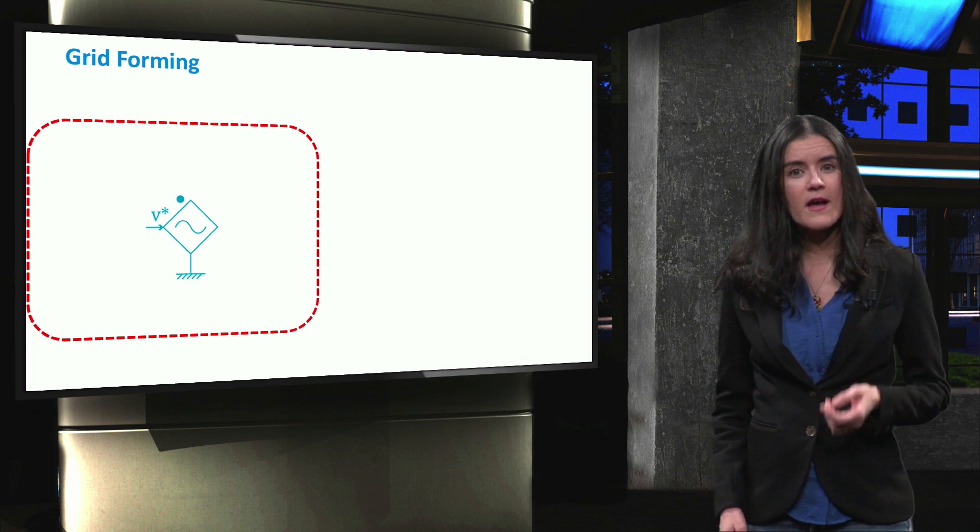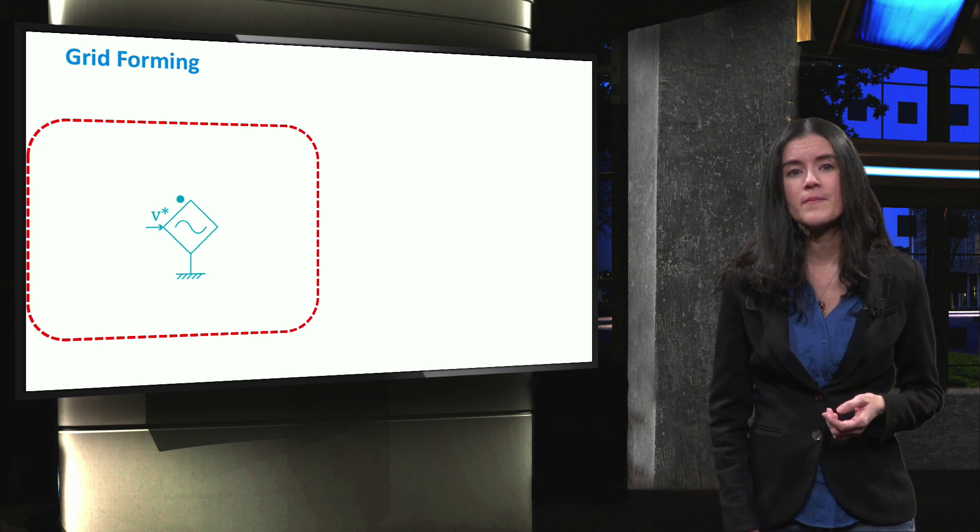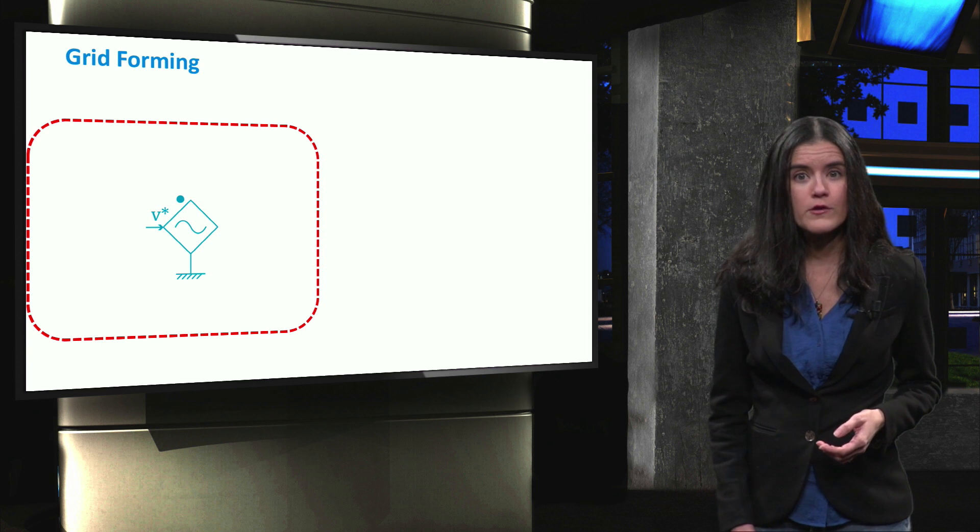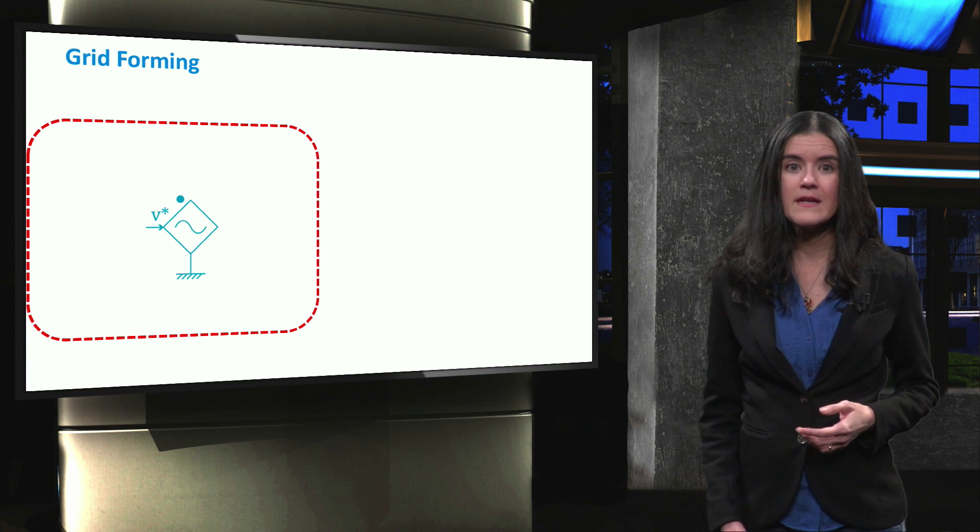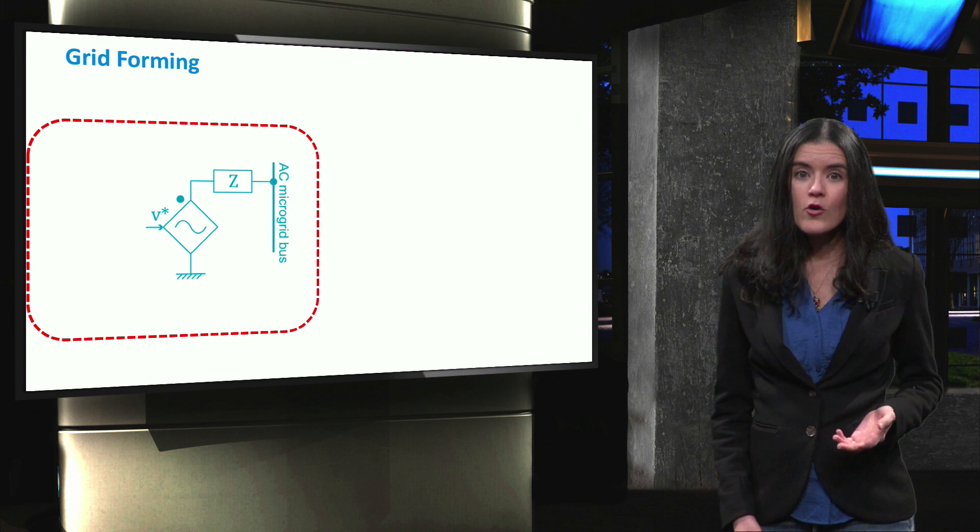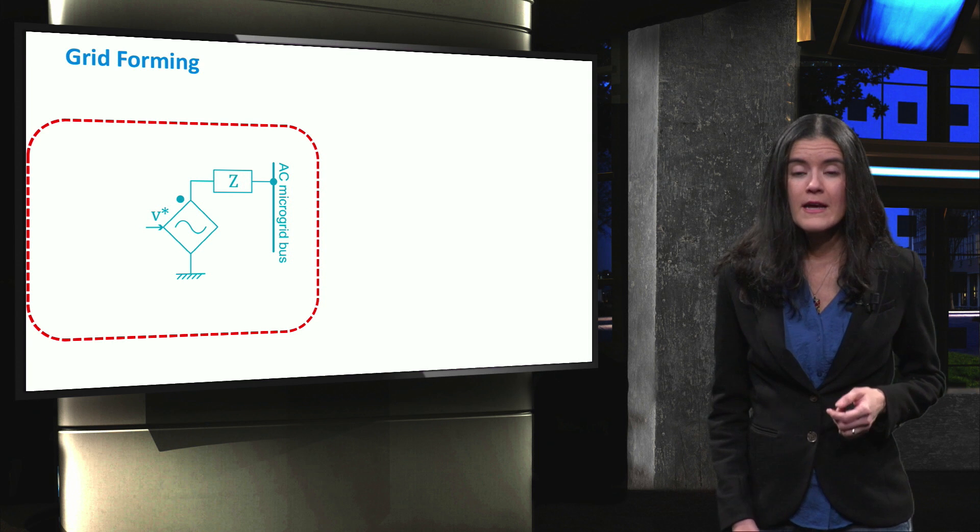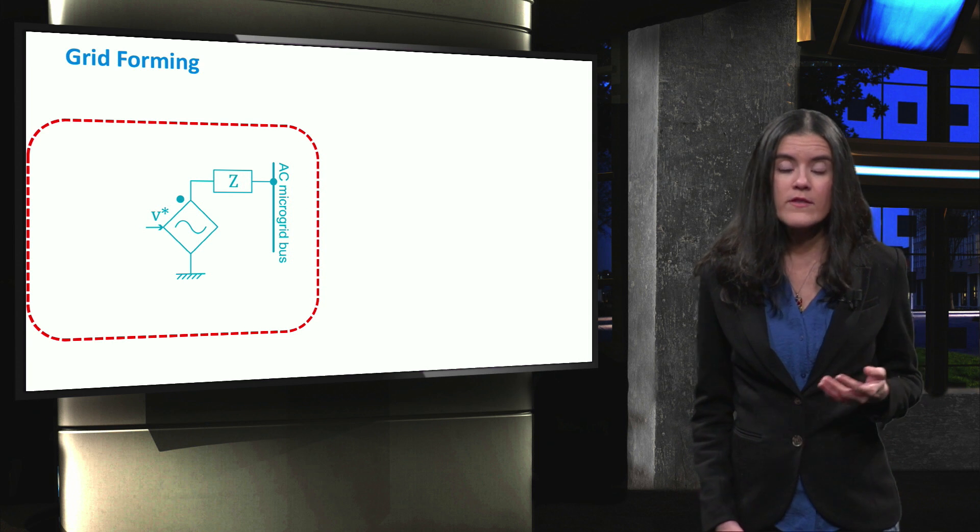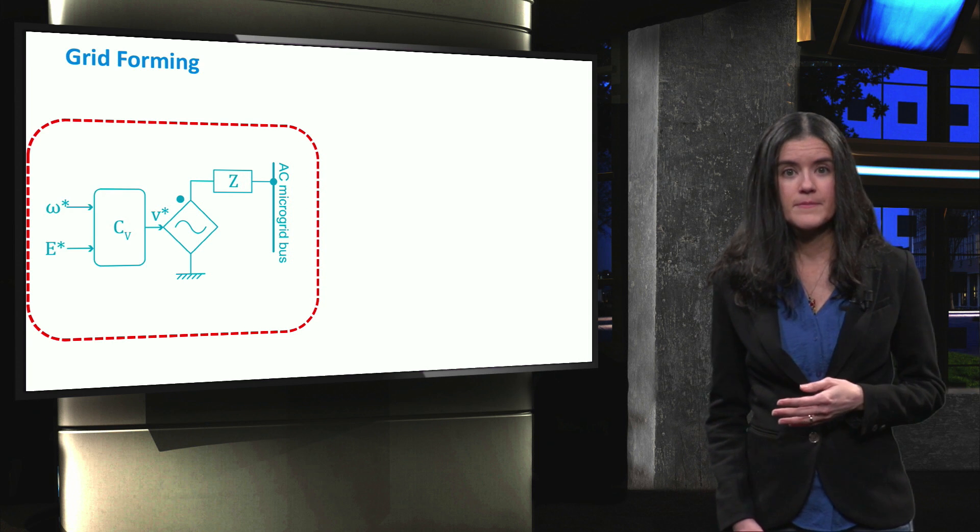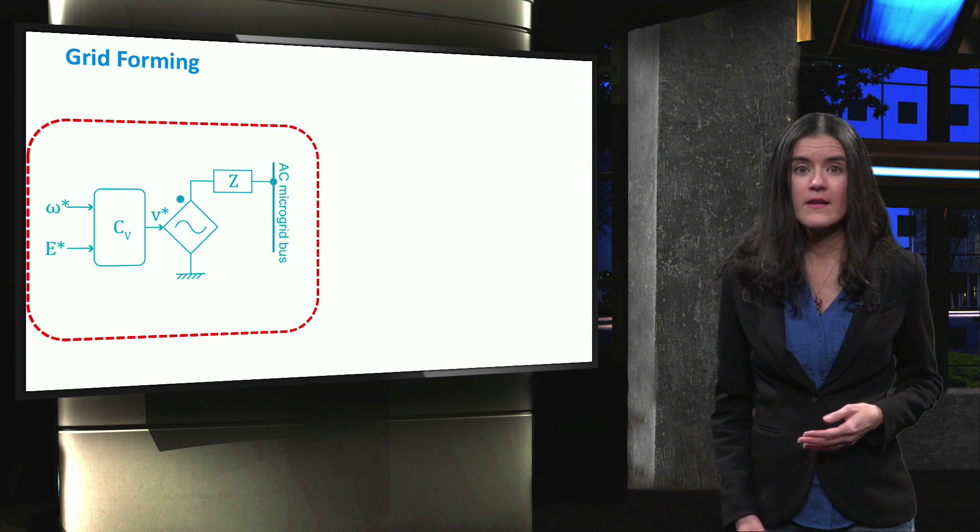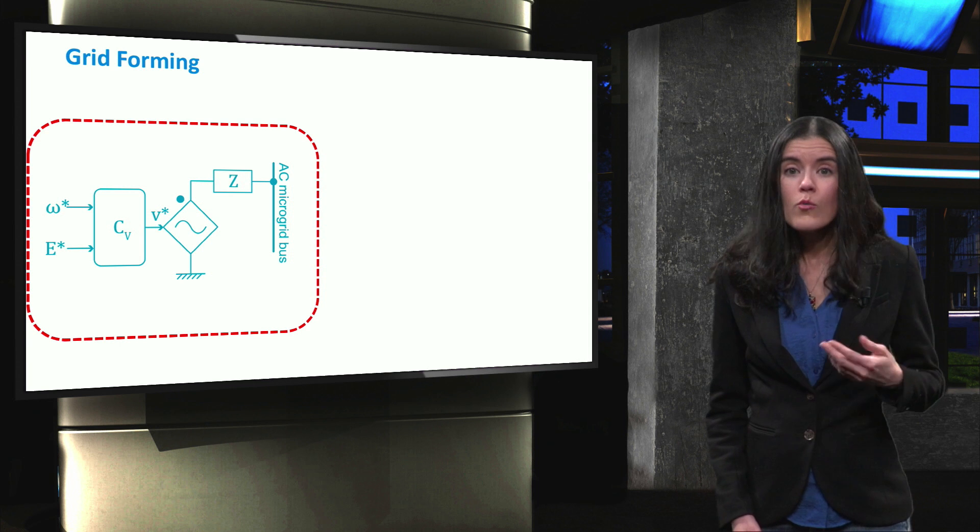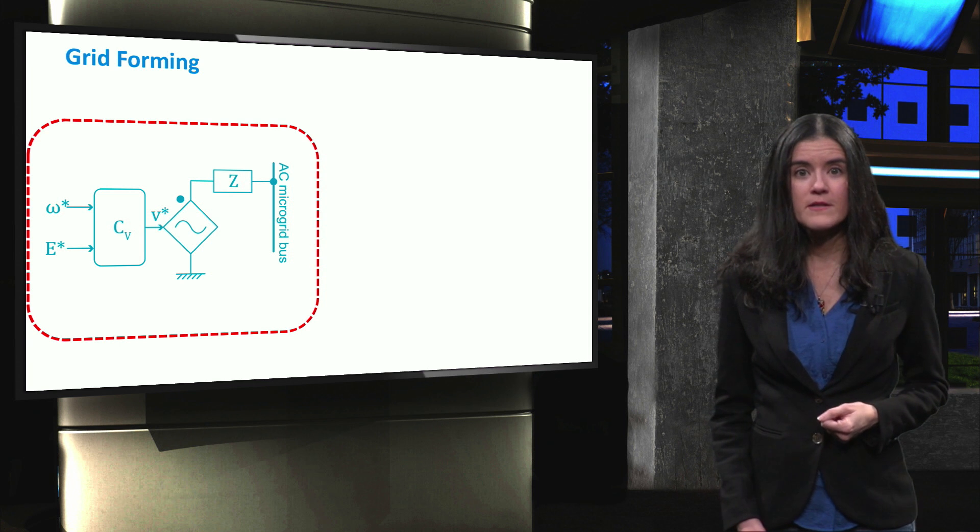So let's first have a look at the grid-forming type. A grid-forming converter can be represented by an ideal AC voltage source with low output impedance. The main goal of a grid-forming converter is to form a stable grid with constant voltage and frequency. For this reason, these converters can only operate in islanded mode, where voltage and frequency is determined by them.